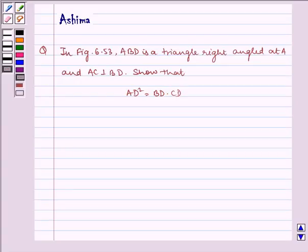Hello and welcome to the session. Let us understand the following question today. In figure 6.53, ABD is a triangle right angled at A and AC is perpendicular to BD. Show that AD square is equal to BD into CD.